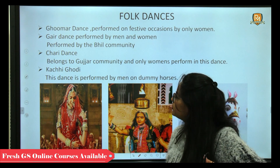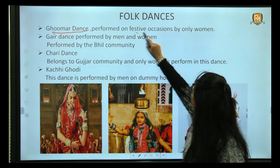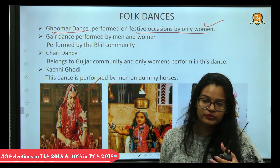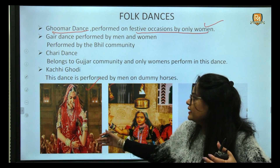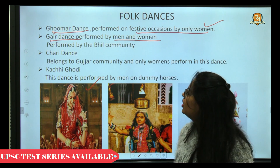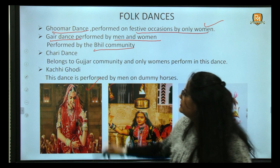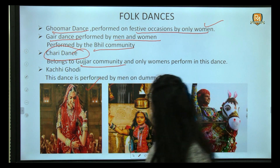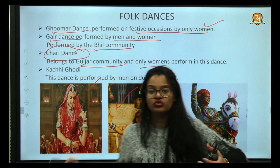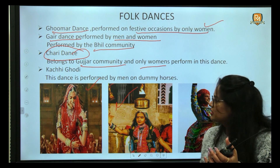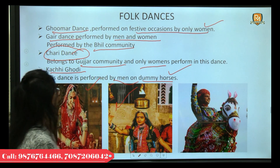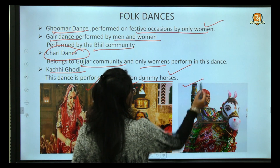Rajasthan's folk dances include: Ghoomar dance — performed on festive occasions by women only; Gheir dance — performed by both men and women of the Bhil community; Chari dance — belongs to the Gujjar community and is performed only by women, who balance pots on their heads while dancing; and Kachighoodi dance — performed by men only on dummy horses.